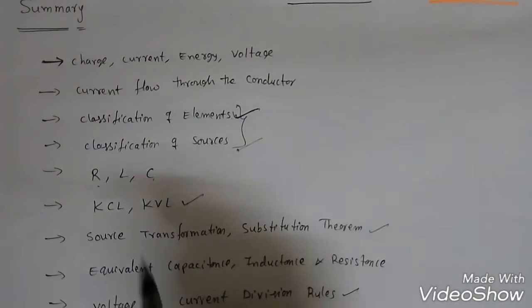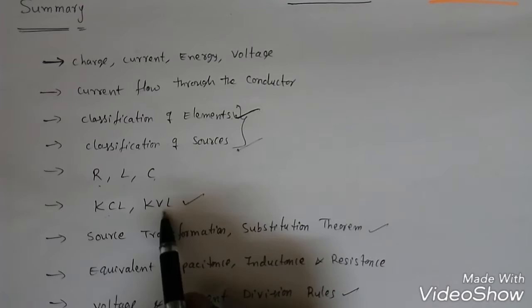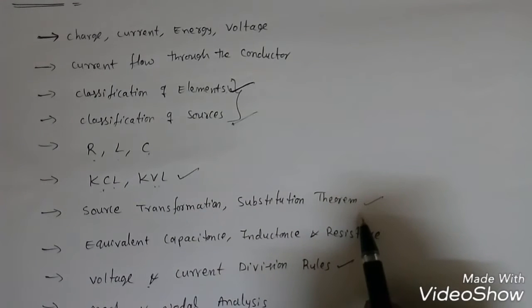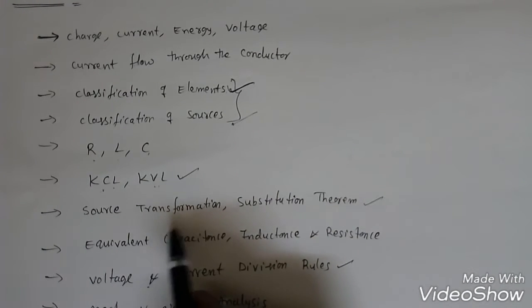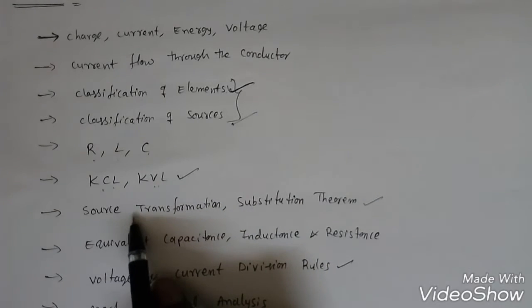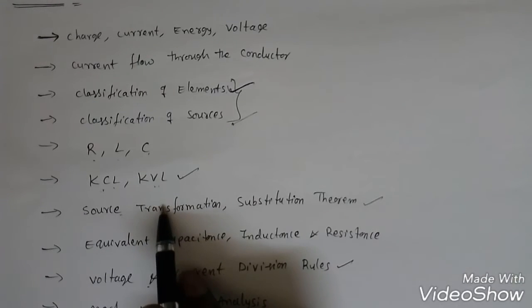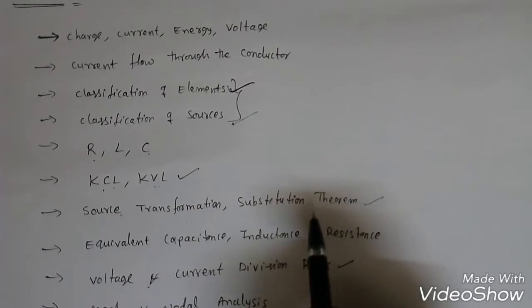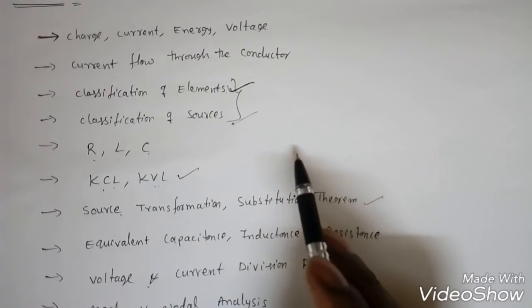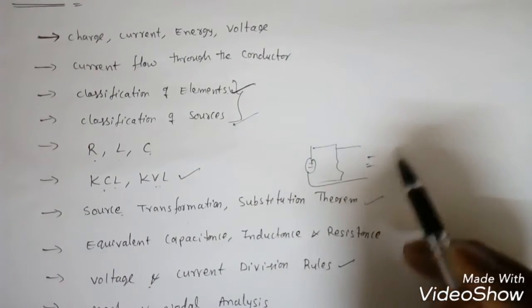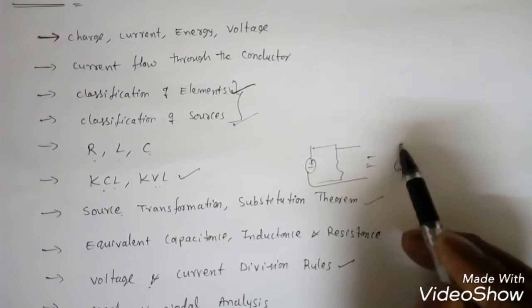Next, two important laws: Kirchhoff's laws — KCL (Kirchhoff's Current Law) and KVL (Kirchhoff's Voltage Law). Then source transformation and the substitution theorem. A voltage source with a series resistance can be converted into a current source, and a current source with a parallel resistance can be represented as a voltage source.